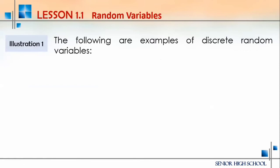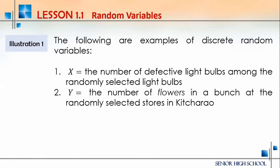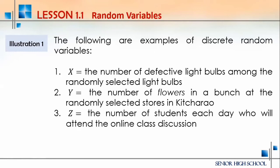Examples of discrete random variables: first, X is the number of defective light bulbs among randomly selected light bulbs — in a classroom with 10 light bulbs, if four are defective, you can count them. Second, X is the number of flowers in a bunch at randomly selected flower stores — since there are only a few stores, you can count the bunches. Third, the number of students each day attending an online class discussion can be counted since enrollment per section is limited to 40 students.